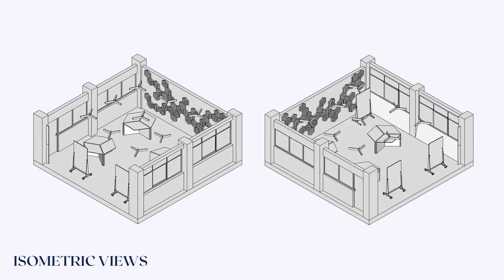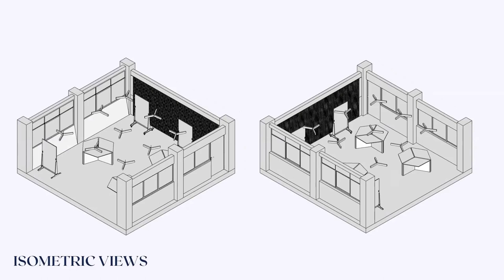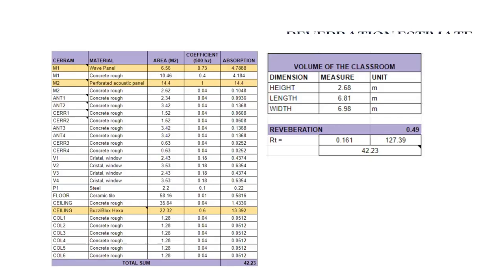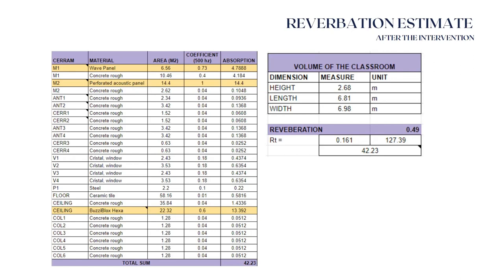These are some isometric views and renders we did for the classroom so our idea can be more specific and interpreted correctly. Finally, in the estimate of the reverberation, we reached almost 0.5 reverberation.